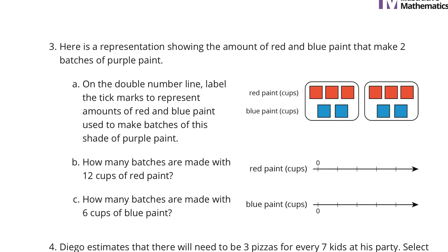Question 3. Here is a representation showing the amount of red and blue paint that make two batches of purple paint. On the double number line, label the tick marks to represent amounts of red and blue paint used to make batches of this shade of purple paint. This is a double batch, so 1 and 2. Our single batch had 3 cups of red to 2 cups of blue. If we increase by 3: red goes 3, 6, 9, 12; and blue goes 2, 4, 6, 8.